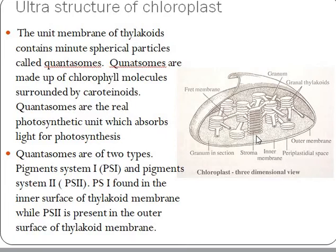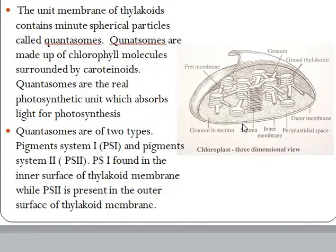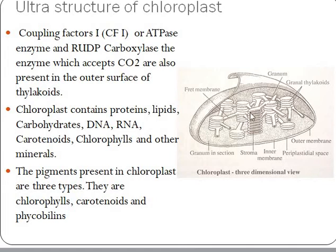On the outer surface of the thylacoid membrane, along with pigment system molecules, we can see coupling factor 1 and RUDP carboxylase. Coupling factor 1 is an ATPase enzyme meant for phosphorylation. RUDP carboxylase is the carbon dioxide acceptor and it accepts carbon dioxide for doing photosynthesis. Chloroplast also contains proteins, lipids, carbohydrates, DNA, RNA, carotenoids, chlorophyll, and other minerals.